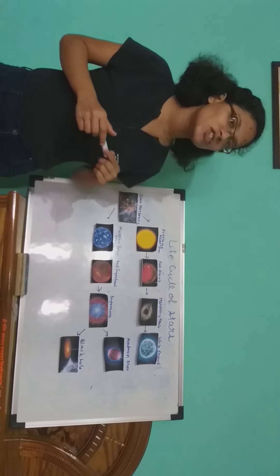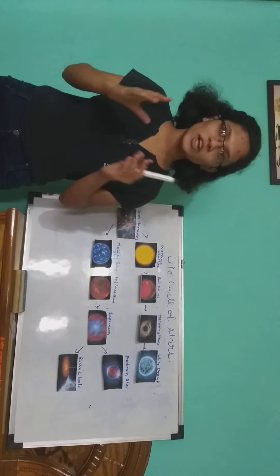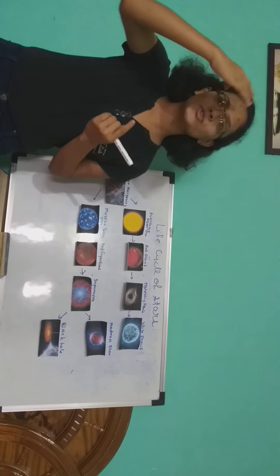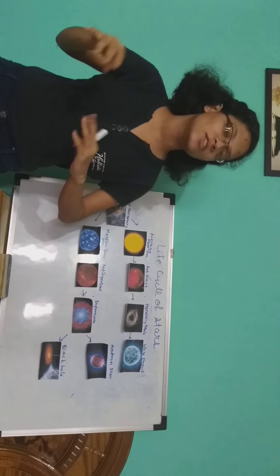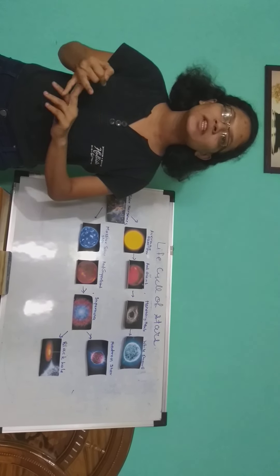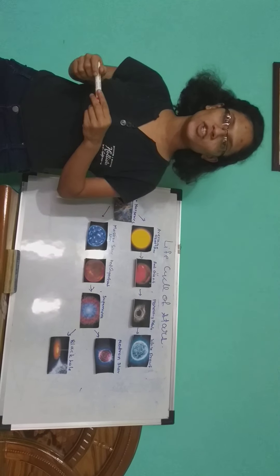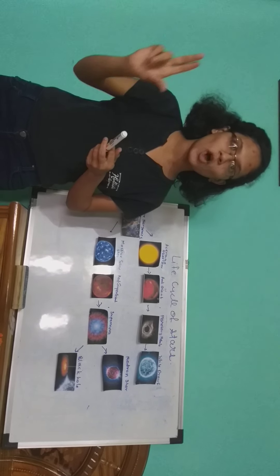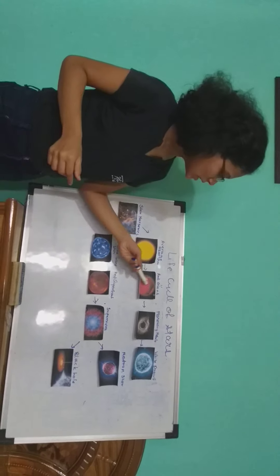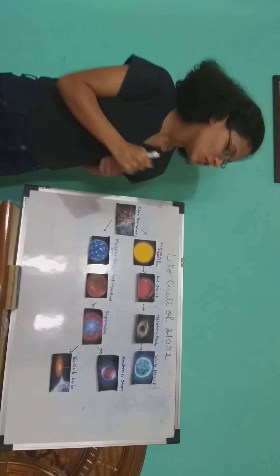This red giant is going to split into layers. When the red giant forms, it is going to expand and engulf planets such as Mercury, Venus, Earth, and Mars. It's going to split into layers like an onion has layers. After this, it's going to get converted into a planetary nebula.